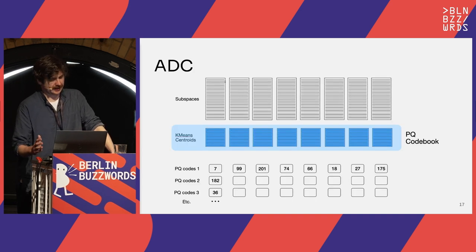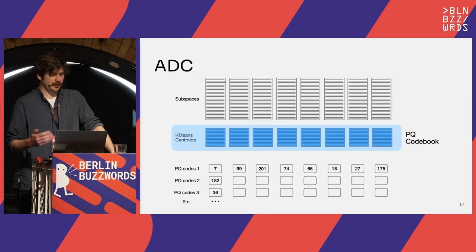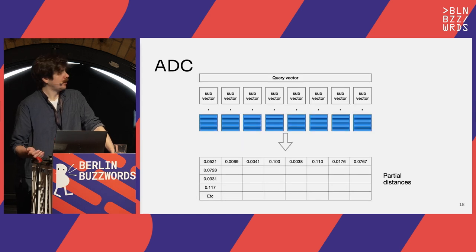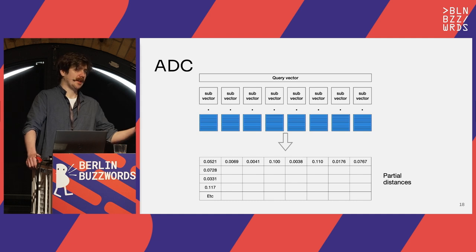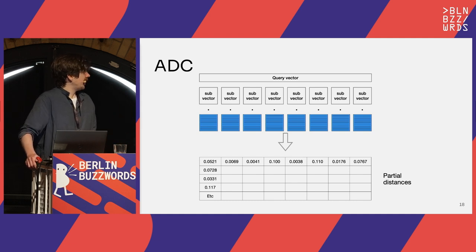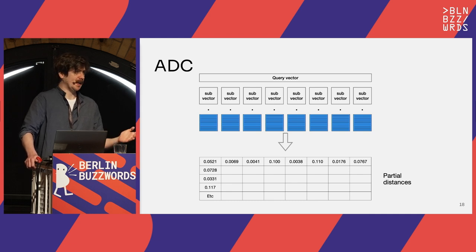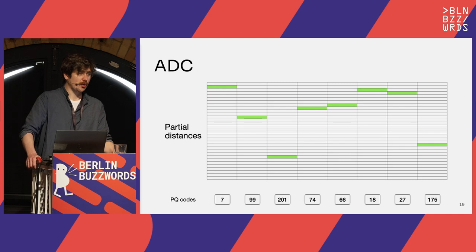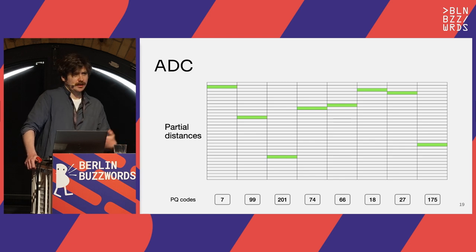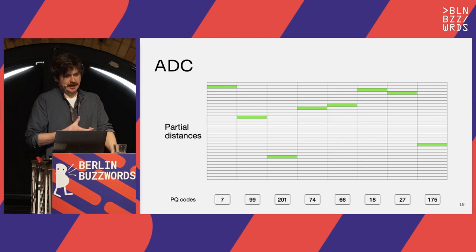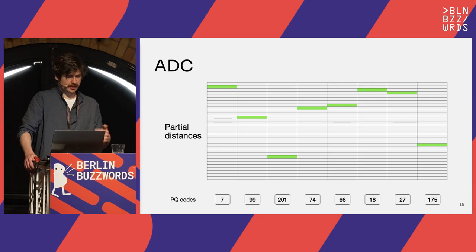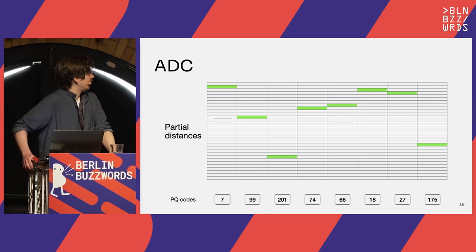In ADC, at the start of a query we split the query into sub-vectors along the same lines as the product quantization. For each centroid, we calculate a fragment of our distance and store it in a lookup table — contiguous in memory and amenable to read-ahead and prefetching. At query time, as we evaluate quantized vectors for similarity, we don't do distance calculations — we just do lookup and accumulation. This is very SIMD-friendly: we map encoded vectors to memory offsets, accumulate vertically across dimensions, and end with a single horizontal reduction.